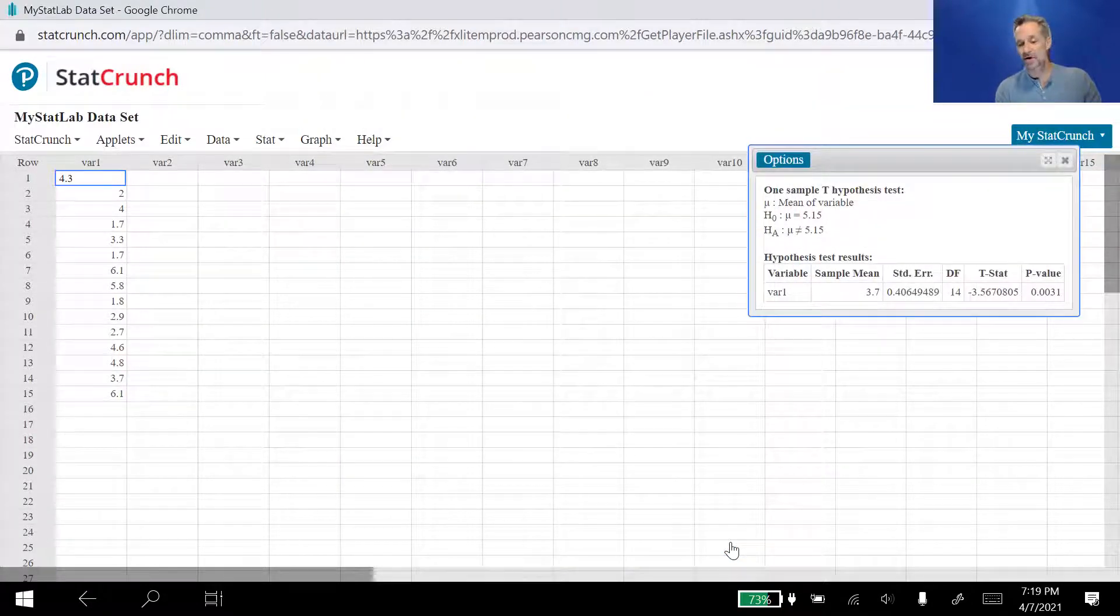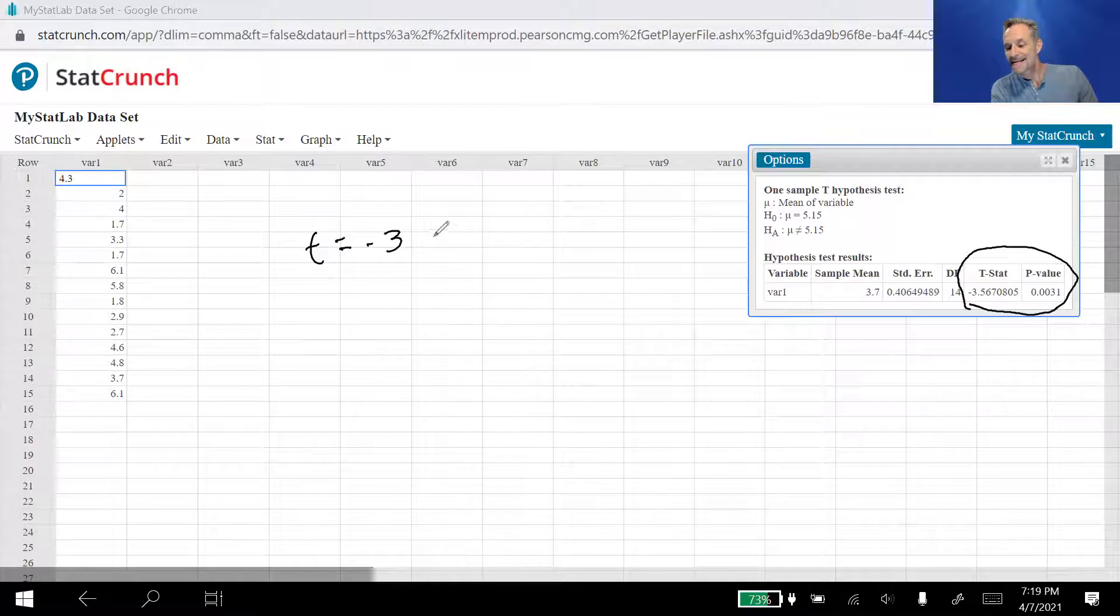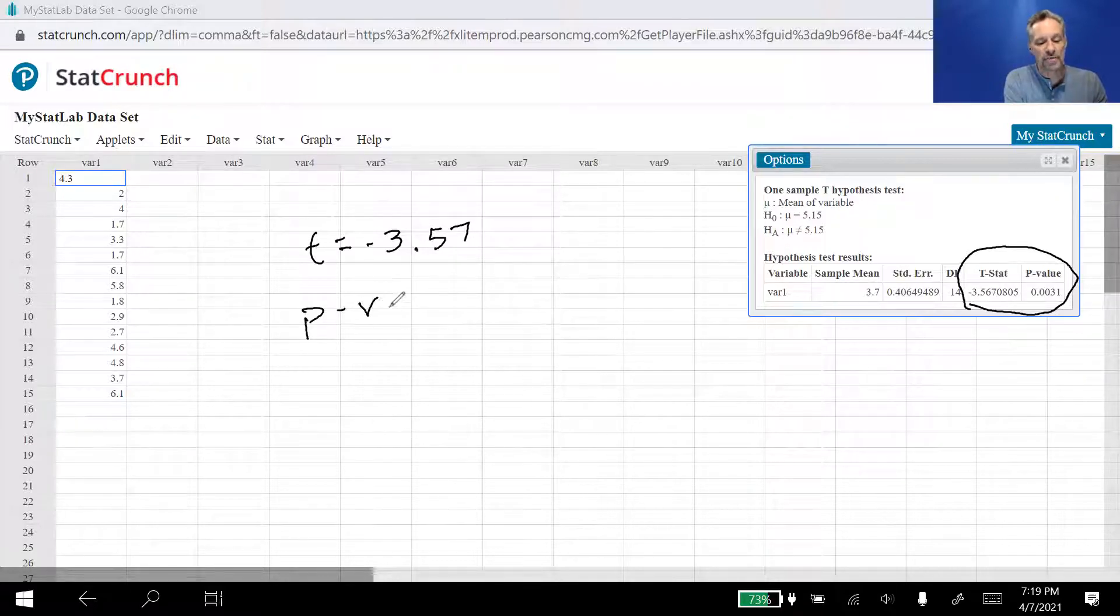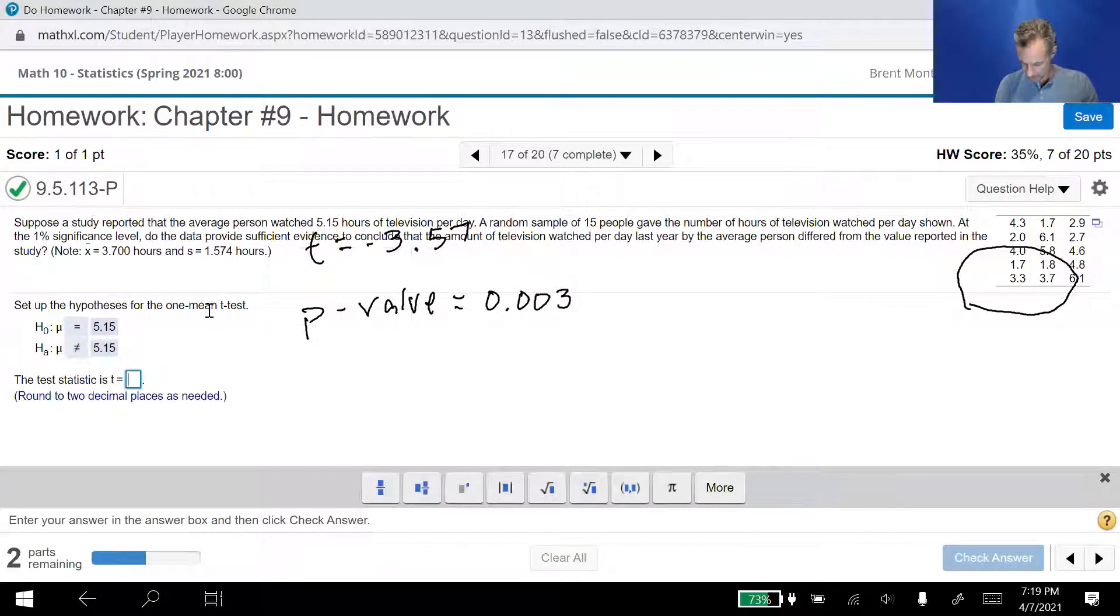All we're looking for in this case are two values here. One is the T statistic and one is the P value. We technically don't need the T statistic. We only need it because they're asking for us to enter it into the problem. That T statistic, 3.57 to two decimal places, is actually used by the computer to find the P value. Since we're doing the P value approach, all we really need is the P value. So the P value here is 0.003, if we go to three decimal places. So there's my T statistic, my P value. We can go back and answer the questions now. So the T statistic to two decimal places, negative 3.57.